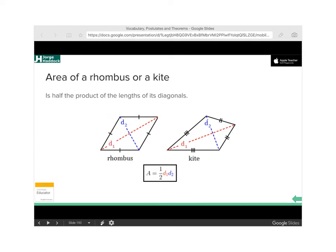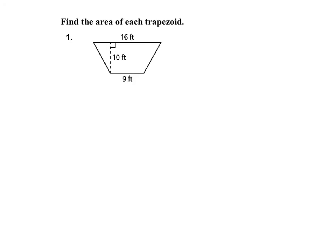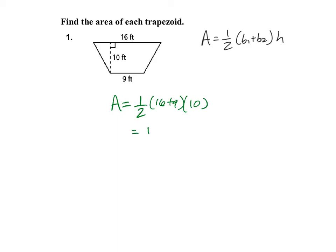Let's see a couple of examples. Find the area of each trapezoid. The area of a trapezoid is one-half times (base one plus base two) times height. In this case, area equals one-half of (16 plus 9) times 10, so one-half of 25 times 10, which equals 125 square feet — because we're working with area.